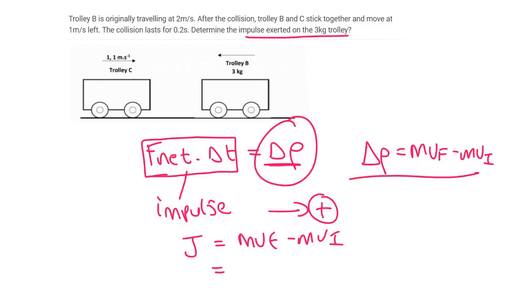And so we're doing this on the 3kg block. So that's going to be 3kg. Now, the final velocity of the 3kg. If we read carefully, they tell us after the collision, trolley B and C stick together and move at 1m per second to the left. So some people might say, yeah but Kevin, now that they are together, don't we have to combine their mass?